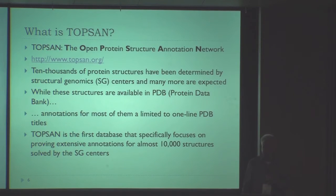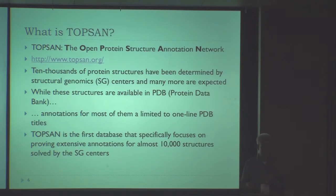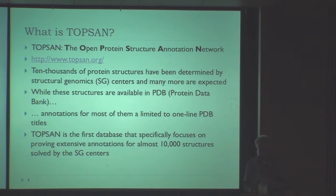That's why we developed TOPSEN, which is basically a kind of wiki for protein structures coming from structural genomics projects. It allows users to annotate those structures in various ways. Currently we have about 400 different annotators — some only annotated one protein, others annotated more. But I hope it's growing, and that's basically what TOPSEN is.